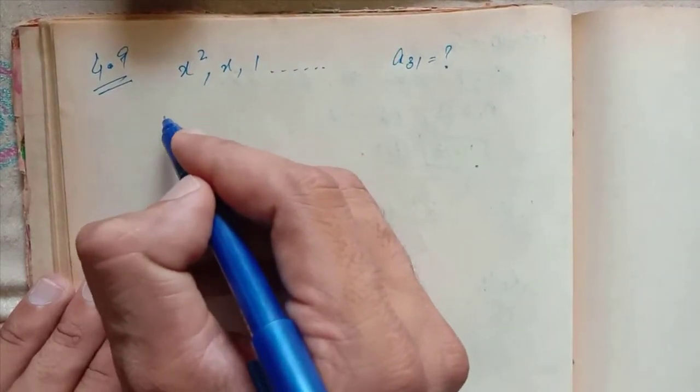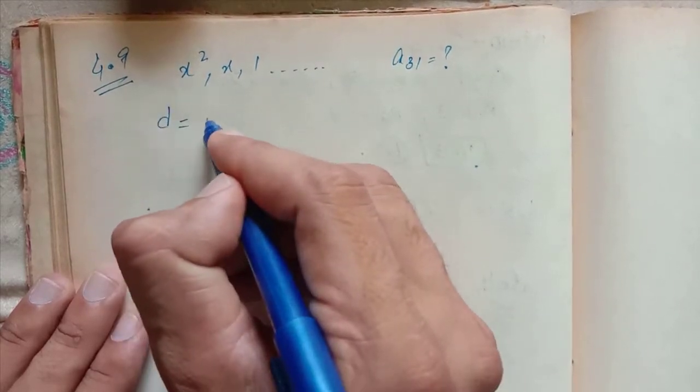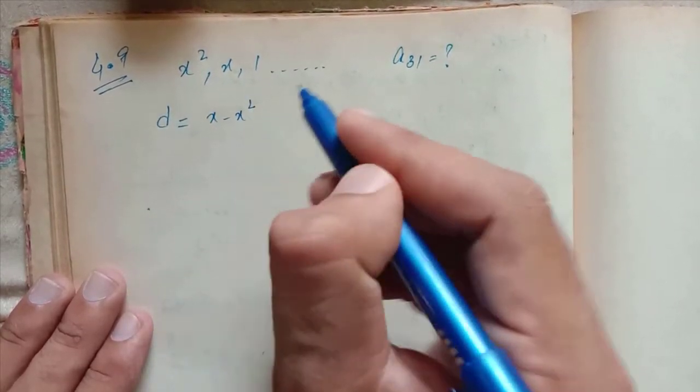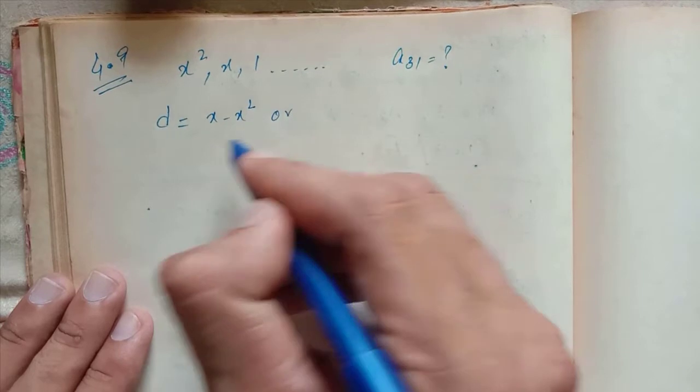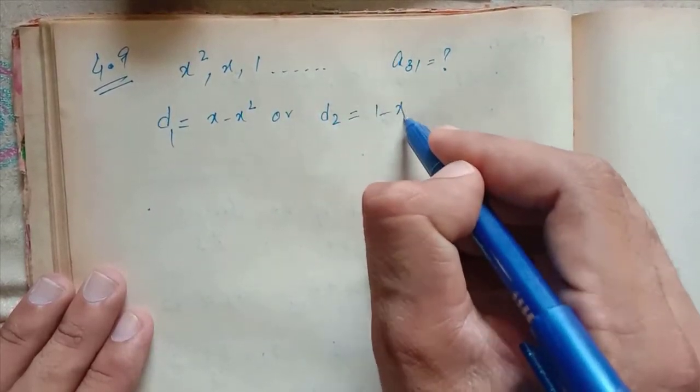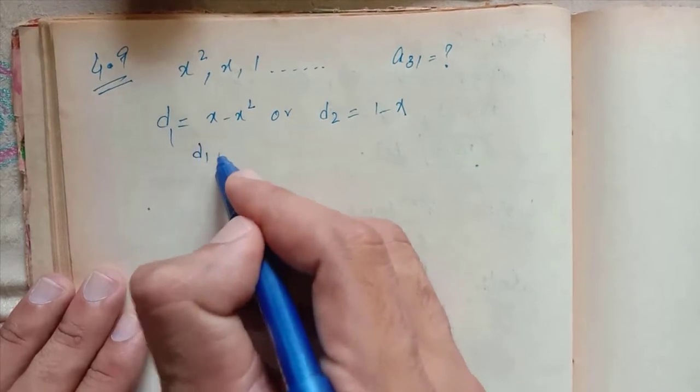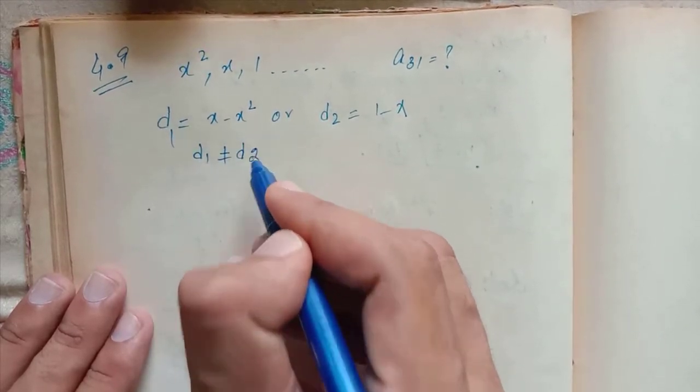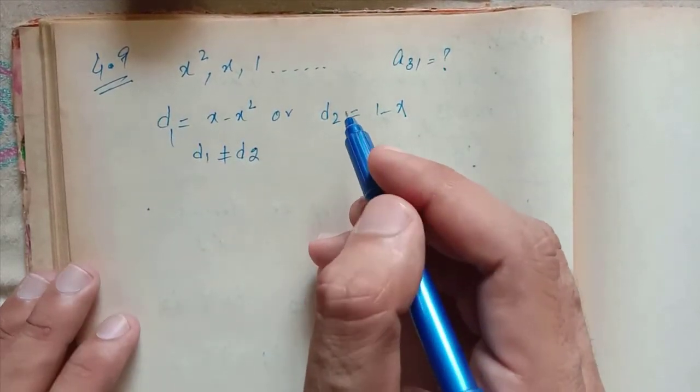First let's see the difference. d1 = x minus x² and d2 = 1 minus x. So d1 not equal to d2, it's not an arithmetic progression.